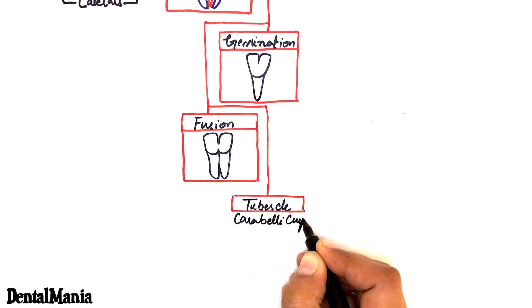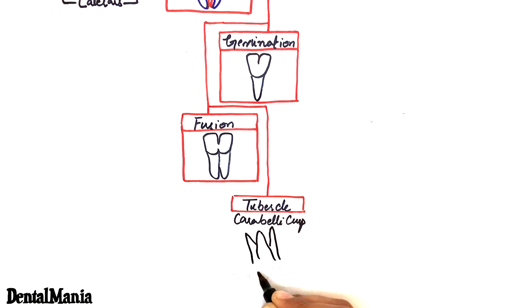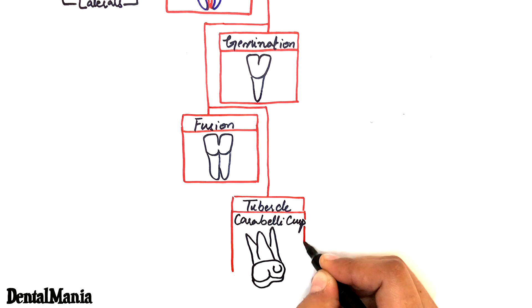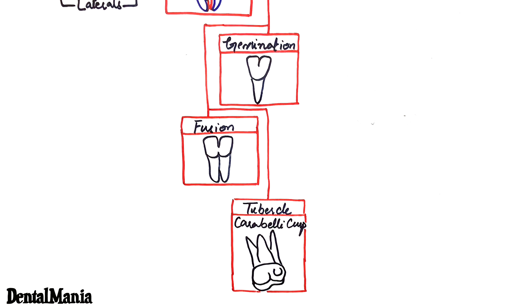Tubercle is a small elevation at the surface of a tooth produced by excessive formation of enamel. The most common example of a tubercle is a carabelli cusp which is located on the palatal aspect of a maxillary molar.